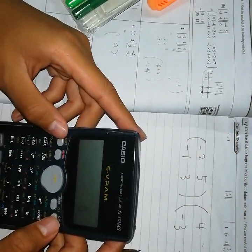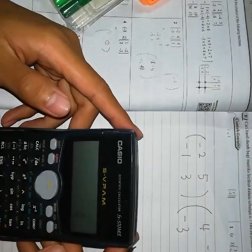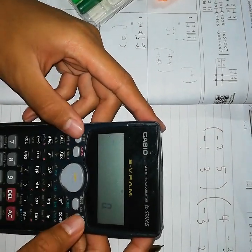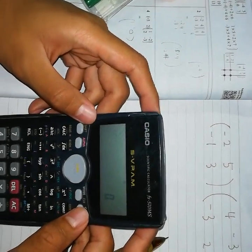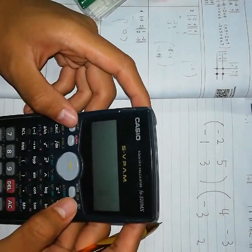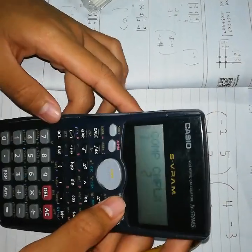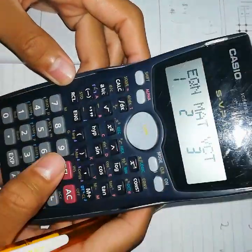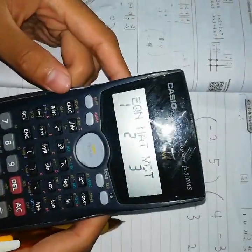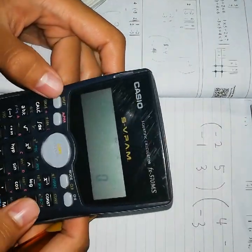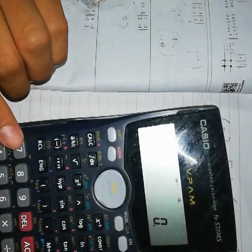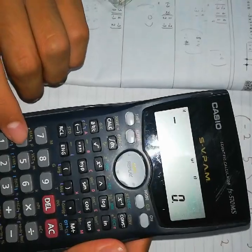Seperti biasa, kita mula-mula kita kena start down luar dia. Kita clear data dia semua supaya dia dah tak ada masalah kan. Next, kita tekan mode, tiga kali. Dan bila kita nampak mat, kita tekan dua. Kita tekan shift, cari mat kat sini. Nampak? Nombor 4 ada mat kan. Tekan dia.